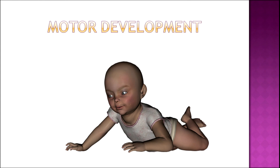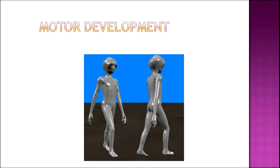Now let us talk about motor development. There is a definite order for acquiring motor skills, and this order proceeds from simple to complex skills. Initially, babies have poor motor control, but this increases as they grow older. Their motor development shows more control — they are more able to control their head, they can sit properly, walk properly, and they also develop in eye-hand coordination.